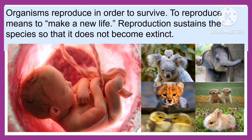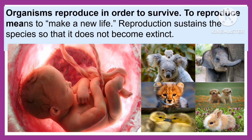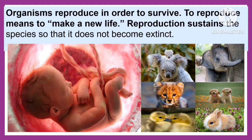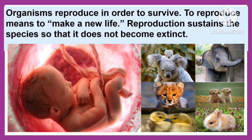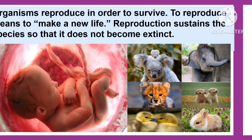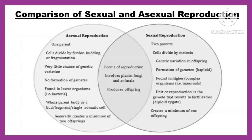Organisms reproduce in order to survive. To reproduce means to make a new life. Reproduction sustains the species so it does not become extinct. The following are the comparison of sexual and asexual reproduction.